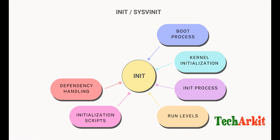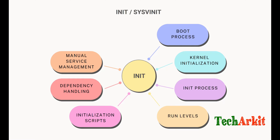However, managing complex interdependencies between services can be challenging with INIT. If one service that another service depends on is stopped, INIT cannot handle that complexity. Services are started and stopped in the order they are defined sequentially. Administrators manually manage services using commands like 'service' or 'chkconfig', which interact with the initialization scripts in /etc/init.d to start, stop, enable, or disable services.